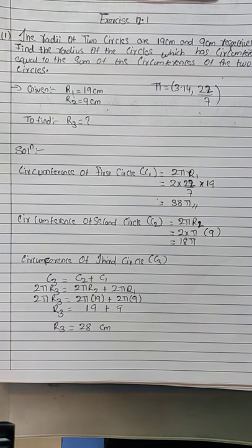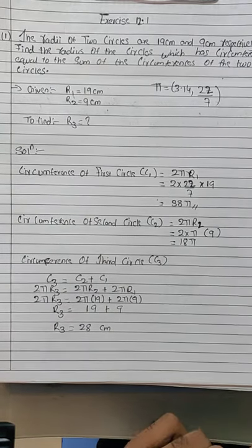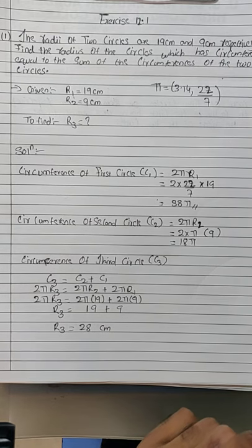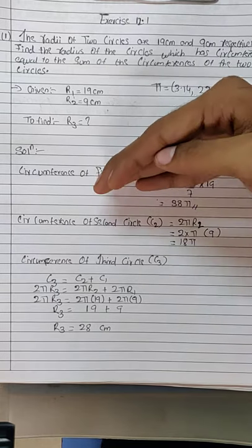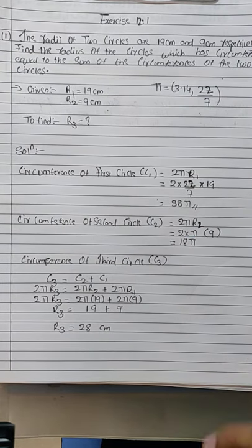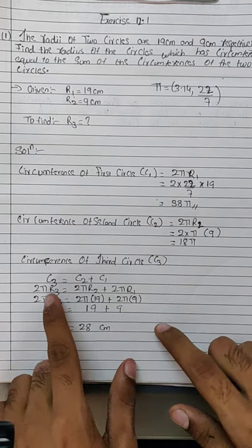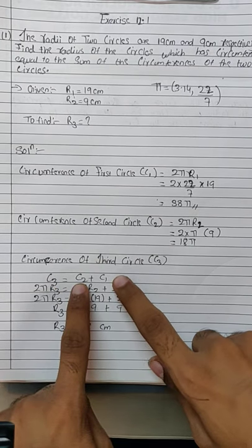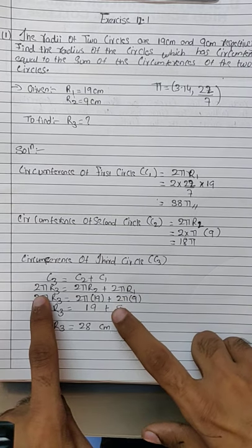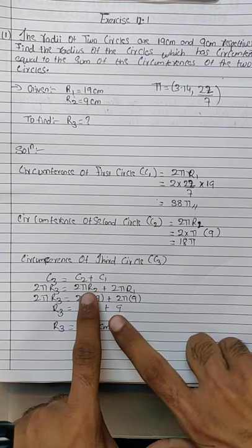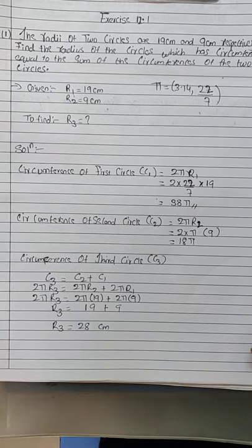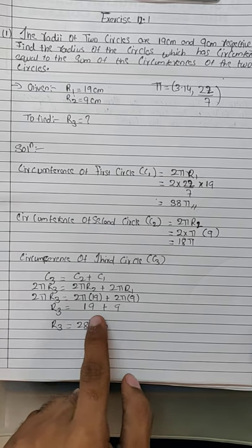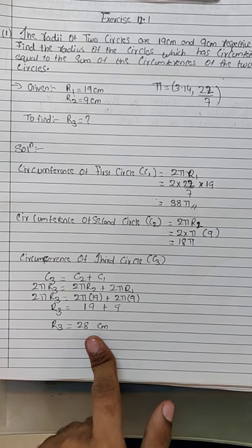So simply, what we did: we were asked to find the radius of the circle whose circumference is the summation of the circumferences of the two circles. The circumference of the third circle equals C1 + C2. Since C3 = 2πr3, C2 = 2πr2, C1 = 2πr1, only the radii differ. The 2π is common and cancels out. So r3 = 19 + 9 = 28 cm.